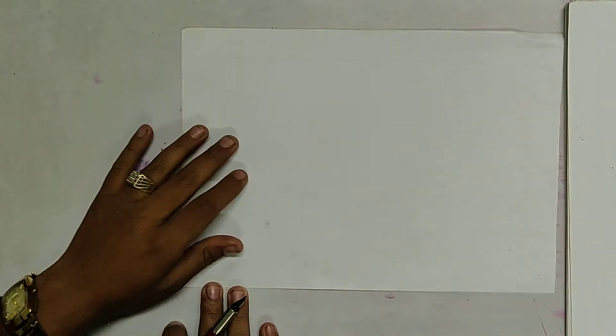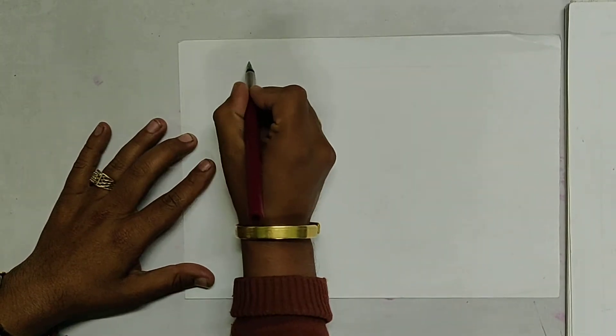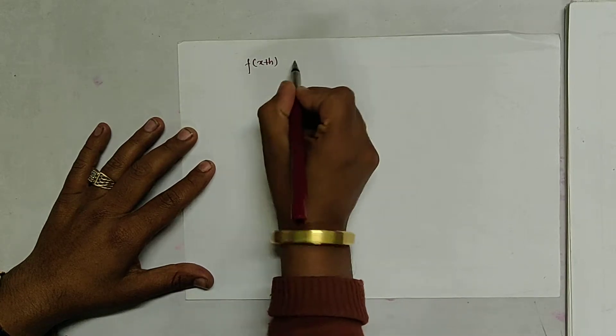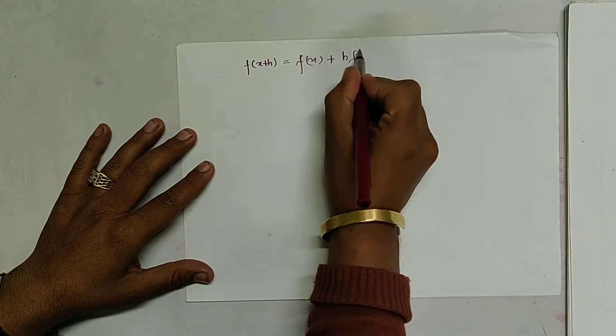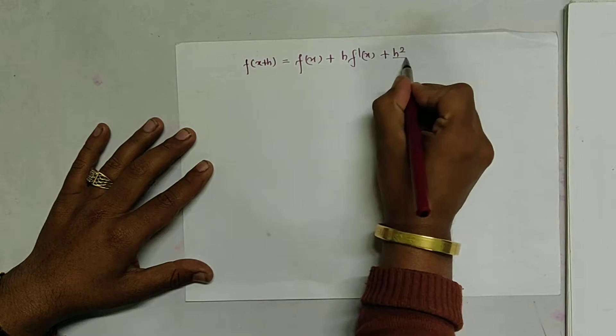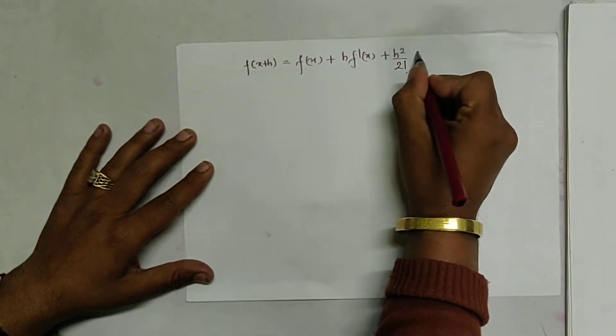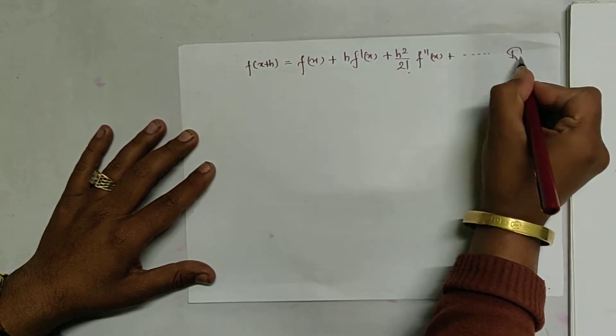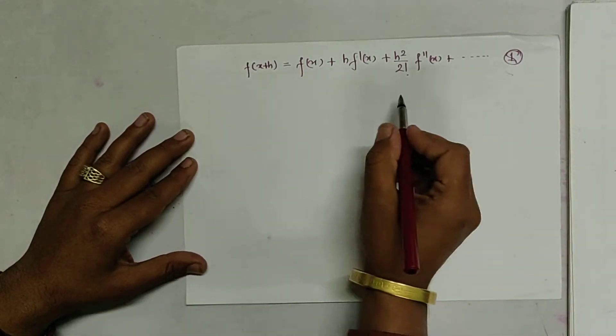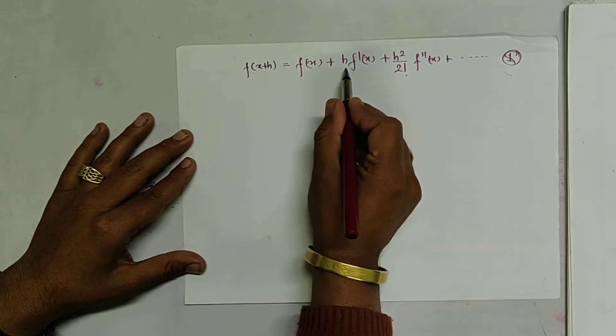Namaste. Today in this video we are going to derive the equation for finding the differentiation. So let us first write the Taylor series: f(x+h) equals f(x) plus h·f'(x) plus h²/2! · f''(x) plus dot dot dot. Let this be equation 1.